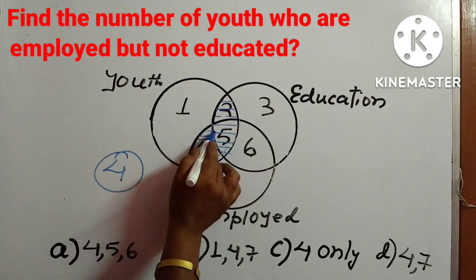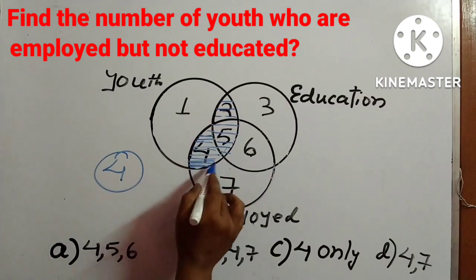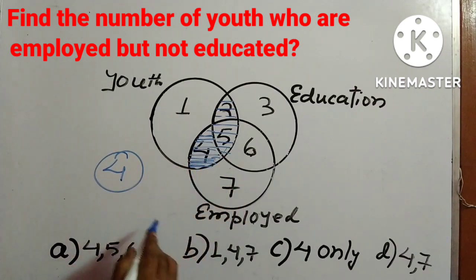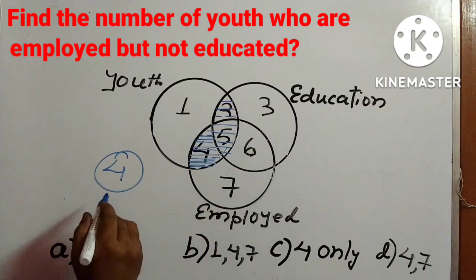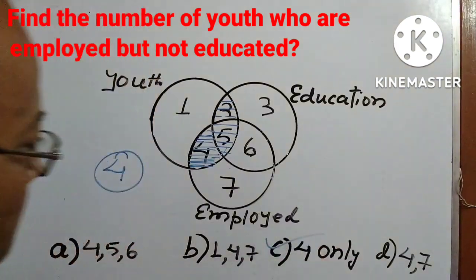This intersection part we have to consider, and that is four. So the answer is four — option C.